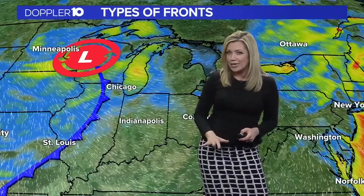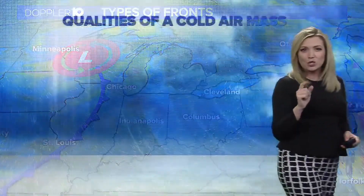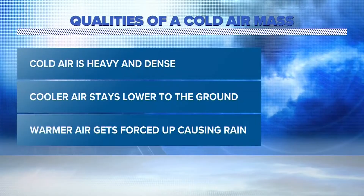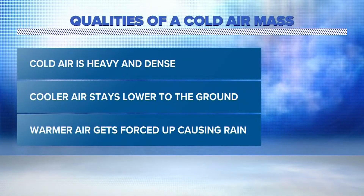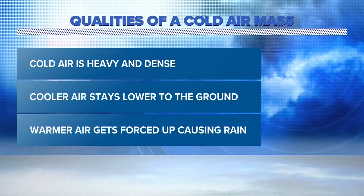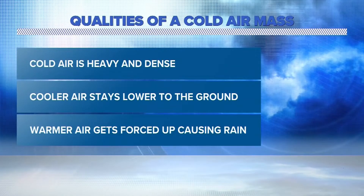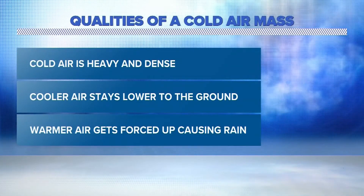Let's start with a cold front. This is what it looks like on a weather map — it's the leading edge of a colder air mass pushing in. Cold air is heavy and dense and it likes to stay low and near the ground. The air in front of a cold front is forced up, cooling it and condensing it into a band of rain or snow depending on the season. That's why cold fronts produce precipitation.